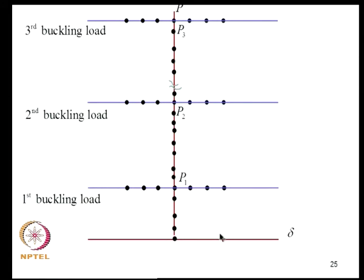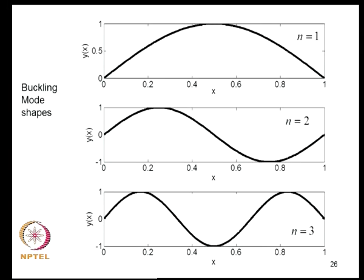Equipped with this analysis we can redraw the load-deflection diagram. For P below P1, the path traces the trivial branch. At P = P-critical the path bifurcates. There are infinitely many P-criticals and correspondingly infinite branches. From an engineering standpoint we are interested only in the lowest P-critical - the load below which the structure must be designed to operate. The buckling mode shapes are sinusoidal: the first mode is a half sine wave, the second mode has two half-waves, and so on.